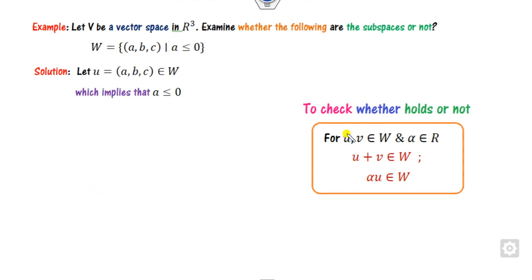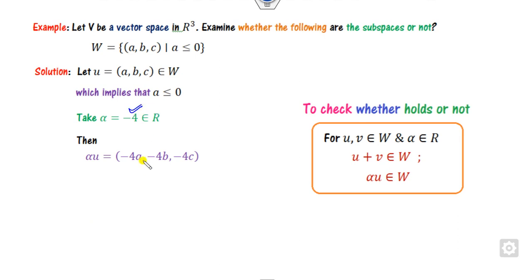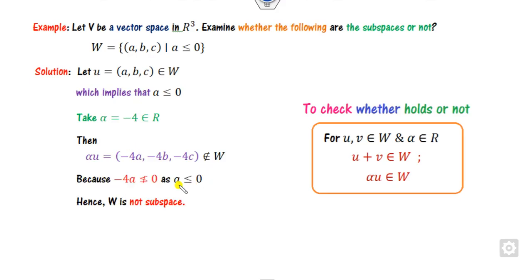Let u belong to W, where u = (a, b, c) in R³ satisfying the given condition. Consider alpha as any scalar number. Then alpha*u = (alpha*a, alpha*b, alpha*c). Can this first component alpha*a always be less than zero if a < 0? No, because if alpha is a negative number, then alpha*a becomes positive. It means this property is not satisfied. Hence, since one property fails, this is not a subspace.